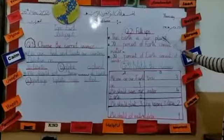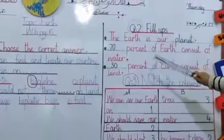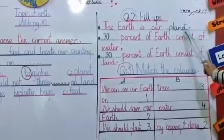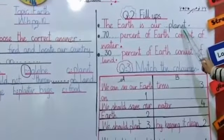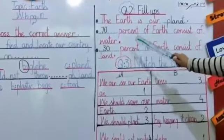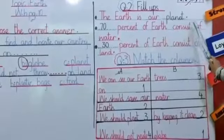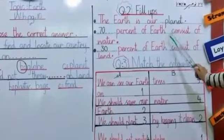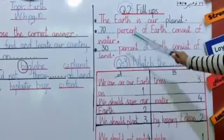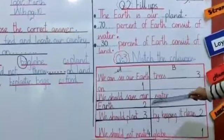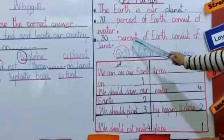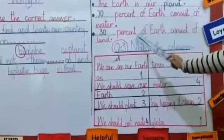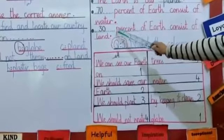Question number 2 is fill in the blanks. The earth is our dash — the answer is planet. Next: dash percent of earth consists of water — the answer is 70 percent. Next: dash percent of earth consists of land — the answer is 30 percent.